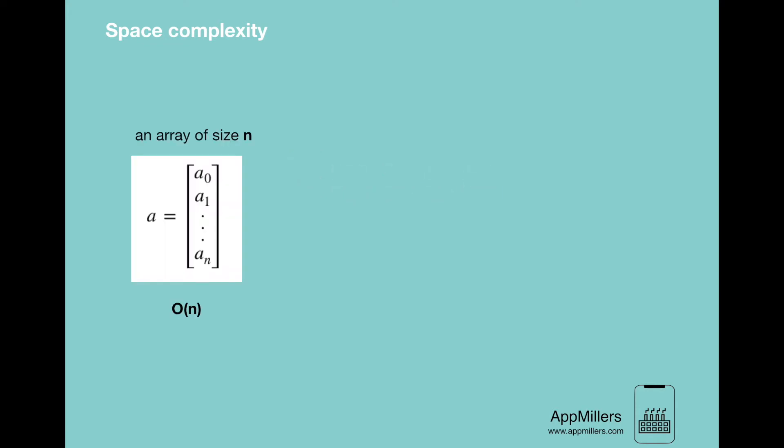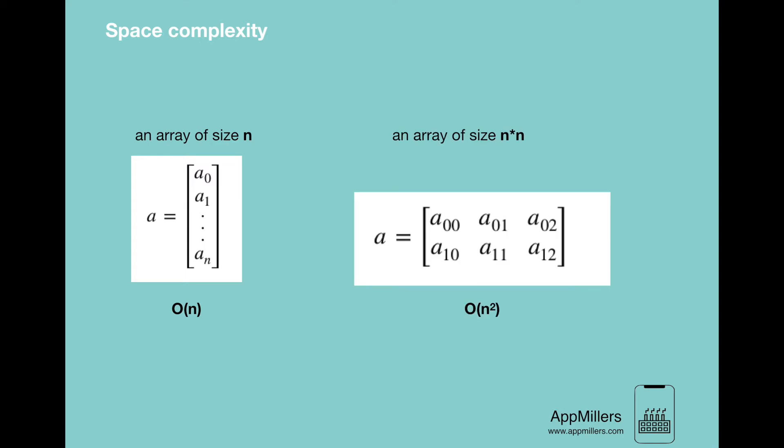For example, if we need to create an array size of n, O(n) space will be required. If we need a two-dimensional array of size n by n, O(n²) space will be required. To make things clear, let's look at the two examples below.